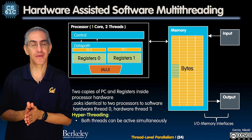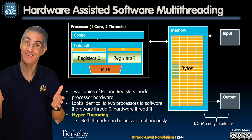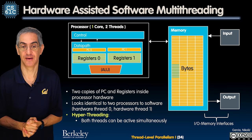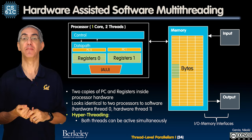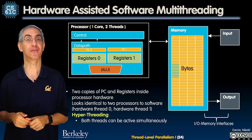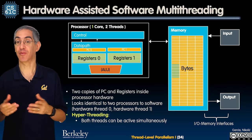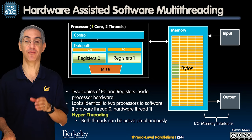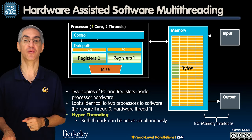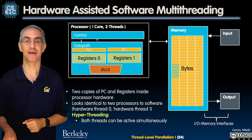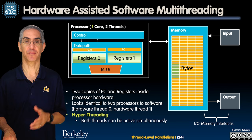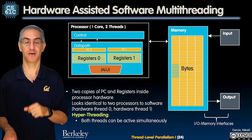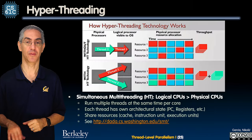We call this — actually Intel came up with this name — Intel called it hyper-threading, because both threads can be active simultaneously. I still have one memory, but I have two threads in there: two hardware threads on one core.